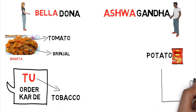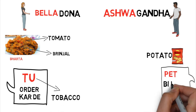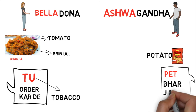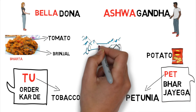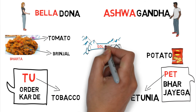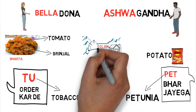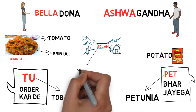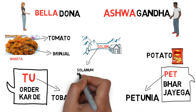Pet bhar jayega — Pet implies Petunia. Solan ghumne gaye the — Solan implies Solanum nigrum.